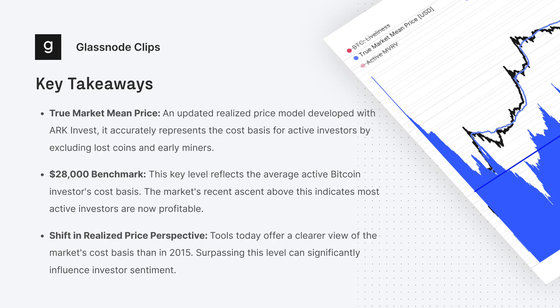Now I think we have the tools and the rigor to understand that this is most likely the true cost basis for the market, which also corresponds with the cycle floor around that $30k level. Being above it is going to be a psychological anchor for many investors — we may start to see investor sentiment shift, as more and more people are now going to be in the green.